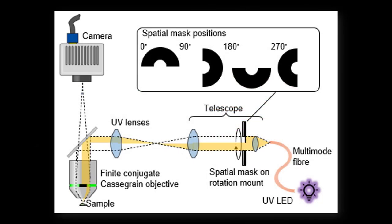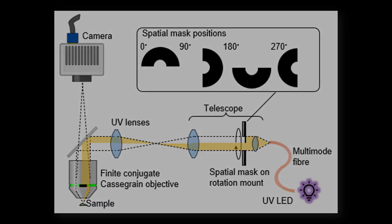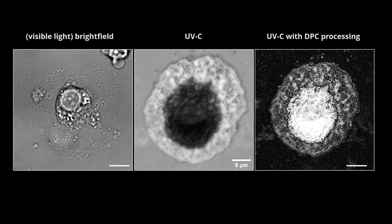They also used a trick to record quantitative information. Using a semi-circular mask in a pupil plane of the microscope, they could record differential phase images, which they used to calculate the extinction coefficients of various cell compartments via DPC processing.